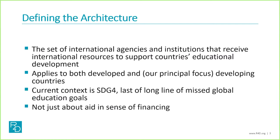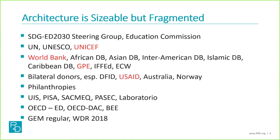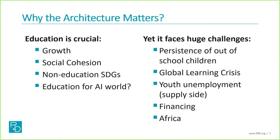Here are some of the institutions — sort of alphabet soup — that are involved in this international architecture. I highlighted in red the ones of the panel members today. As you can see, it's a lot of institutions, some of them somewhat temporary like the Education Commission, but most of them pretty permanent. Just to remind especially people who don't work on education why the architecture matters — education is crucial for economic growth, individual development, social cohesion, and in this SDG world, it's crucial for the other SDGs. As artificial intelligence comes along, it becomes an increasingly important question: what sort of education do we need in such a world?